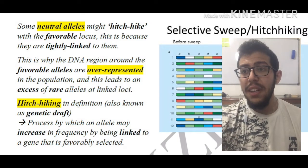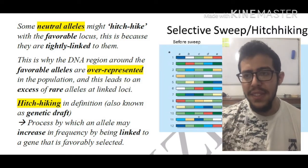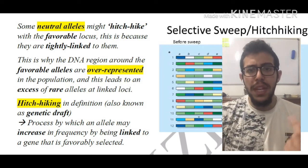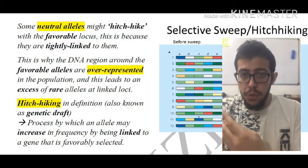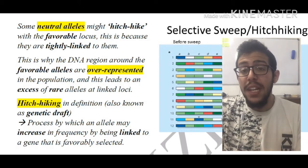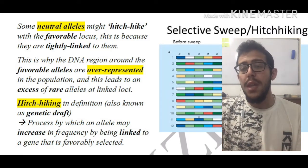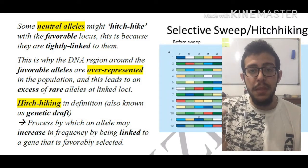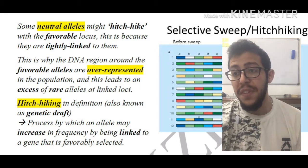This is why the DNA region around the favorable alleles are often over-represented in the population, even though they might not actually be important. They might simply be neutral mutations. However, due to their relative location in the locus, they're going to be over-represented because they are tightly linked to the favorable alleles.